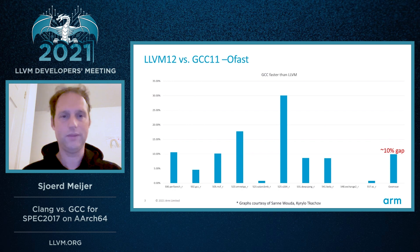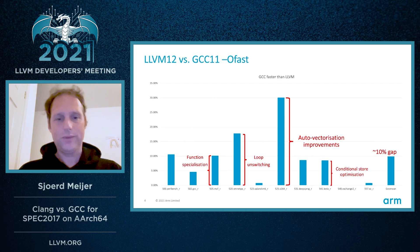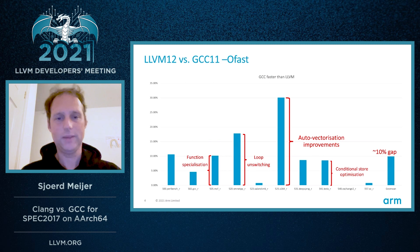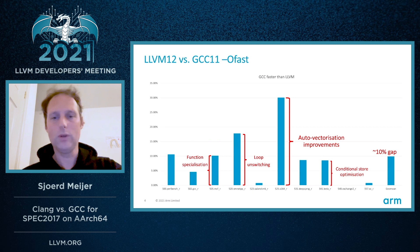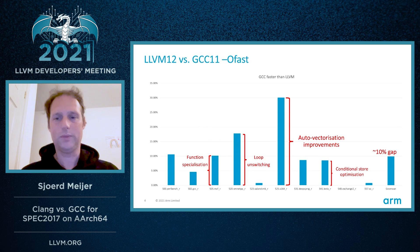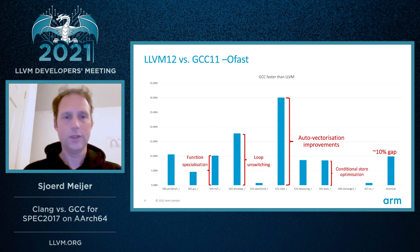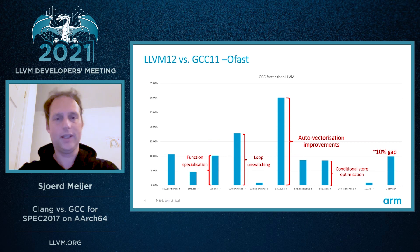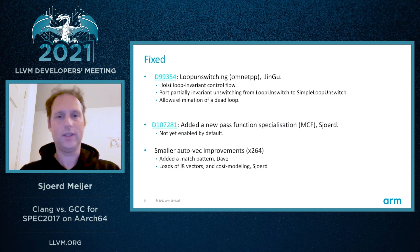We did the first round of performance analysis and found that the gap in MCF was due to a missing optimization: function specialization. In OmnetPP, there was an opportunity for loop unswitching. X264 is all about auto-vectorization. And in Lila, there's a missed conditional store optimization. Those were the first things we started addressing.